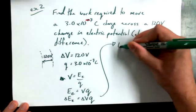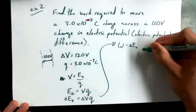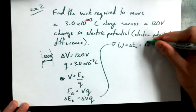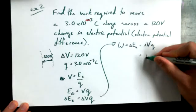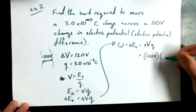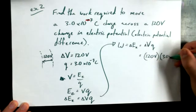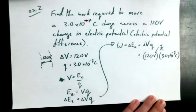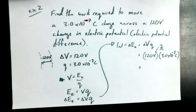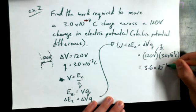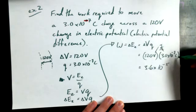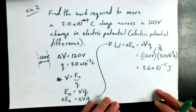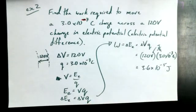The work, which equals change in electric potential energy, is delta V times Q: 120 volts times 3.0 times 10 to the negative 7 coulombs. Since volts is joules per coulomb, the coulombs cancel out and you're left with joules. 120 times 3 times 10 to the negative 7 gives 3.6 times 10 to the negative 5 joules, or 36 microjoules.